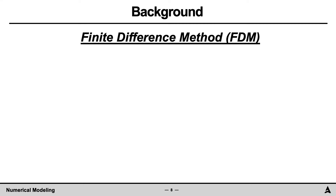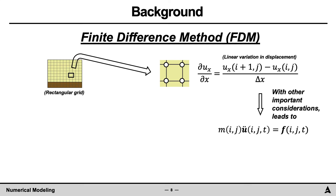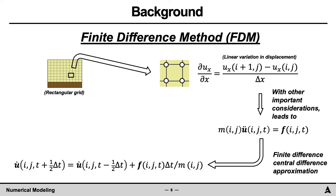Another method to find the unknown displacements is the finite difference method. With this method, displacements can only be determined for a rectangular domain. For each element, the strains are approximated using the finite difference approximation. An example equation is shown here for the normal strain in the horizontal direction. The finite difference approximation for strains is used between all nodes, and with other important considerations leads to an equilibrium equation at each node, identified by variables i and j for the row and column numbers respectively. This equation is mass times acceleration equals force. These equations can be solved for the nodes with time using the finite difference approximation; for example, the central difference approximation is shown here.